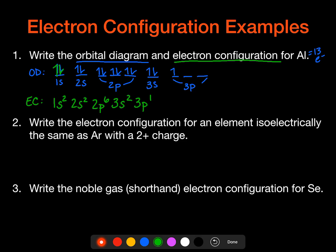So number 2 says, write the electron configuration for an element isoelectrically the same as argon with a 2 plus charge. So isoelectrically the same means it's going to have the same number of electrons as argon with a 2 plus charge. And so we have to think of, what's going to have a 2 plus charge that would look the same as argon? And so calcium is actually a 2 plus charge as an ion, and when it loses its two electrons, it looks like argon.